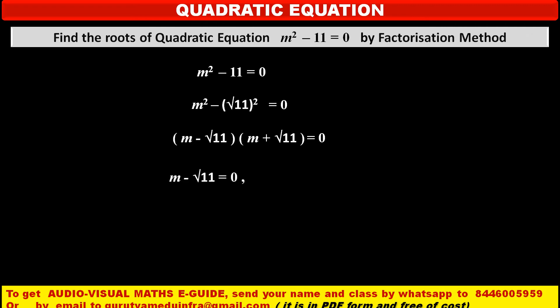So friends, either first bracket m - √11 = 0 or second bracket m + √11 = 0.